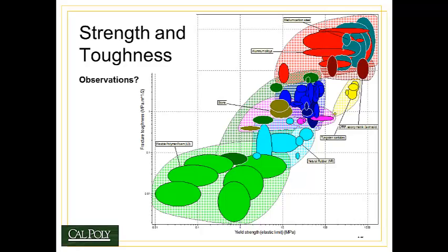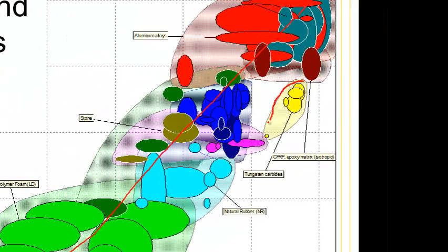Another example of a strong and tough material are the aluminum alloys, shown here by this red balloon. This is why aluminum alloys are used for aircraft cabins, because they're both lightweight and tough enough to withstand the cyclic pressures that they experience. Carbon fiber composites are another good example. But you'll notice that carbon fiber composites are beginning to fall off this primary line that we see here. We can draw a line right through most of these materials relating toughness to strength. The carbon fiber begins to fall off that line.